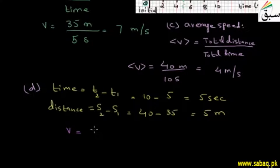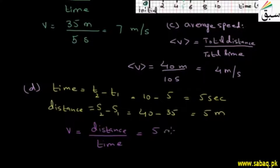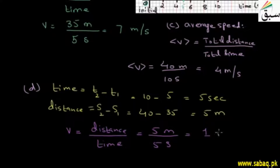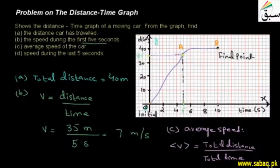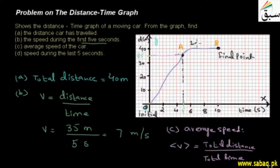Speed equals distance divided by time. In this case, distance is 5 meters and time is 5 seconds. So the answer is 1 meter per second. Going back to the graph, from point A to point B the speed was 1 meter per second.